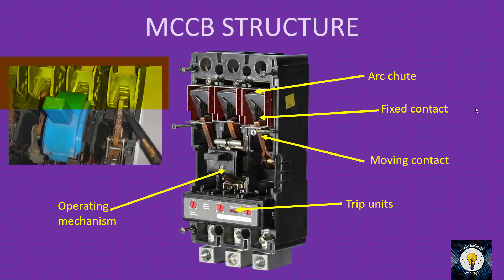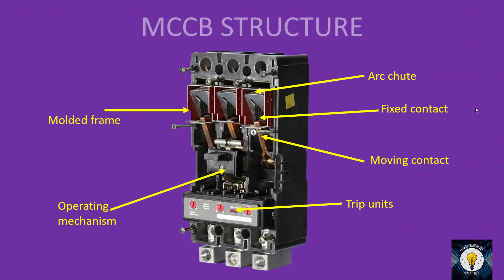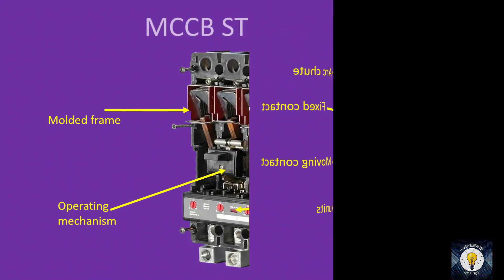The arc chute is divided into small chambers. The arc is forced through these chambers, loses its power, and is extinguished. The last component is the molded frame, which is the outer casing in which all these components sit.